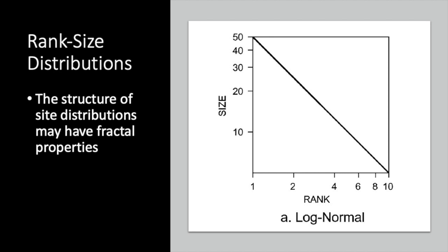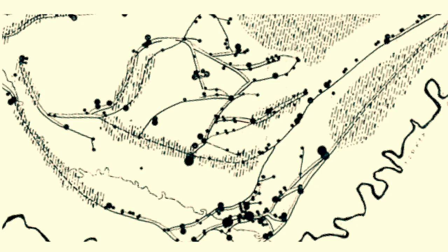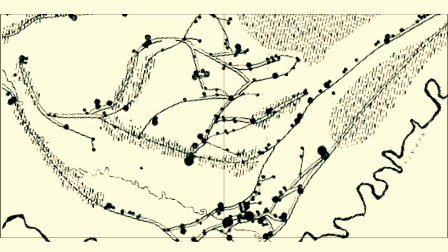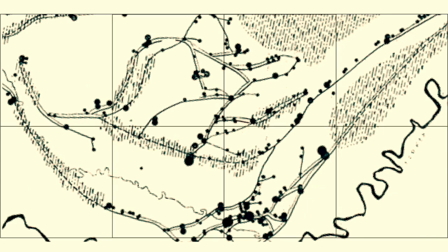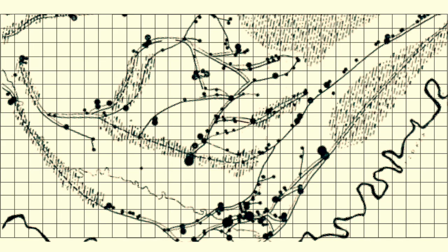The fact that some rank-size distributions can have fractal properties reminds us that fractals might be relevant to other aspects of settlement patterns as well. So it should come as no surprise that the spatial distribution — not just the size distribution — of settlements can also have fractal properties. In fact, we can measure the fractal dimension of a settlement system by using the box counting method. We begin by imposing a grid of large boxes over the map of the area, count how many squares have at least one site in them, and then subdivide the squares into smaller and smaller squares, at each stage counting how many squares contain sites. I began with squares that were 16 units on a side, and then 8, then 4, then 2, then 1. It doesn't matter what the units are, because fractals are scale-free.